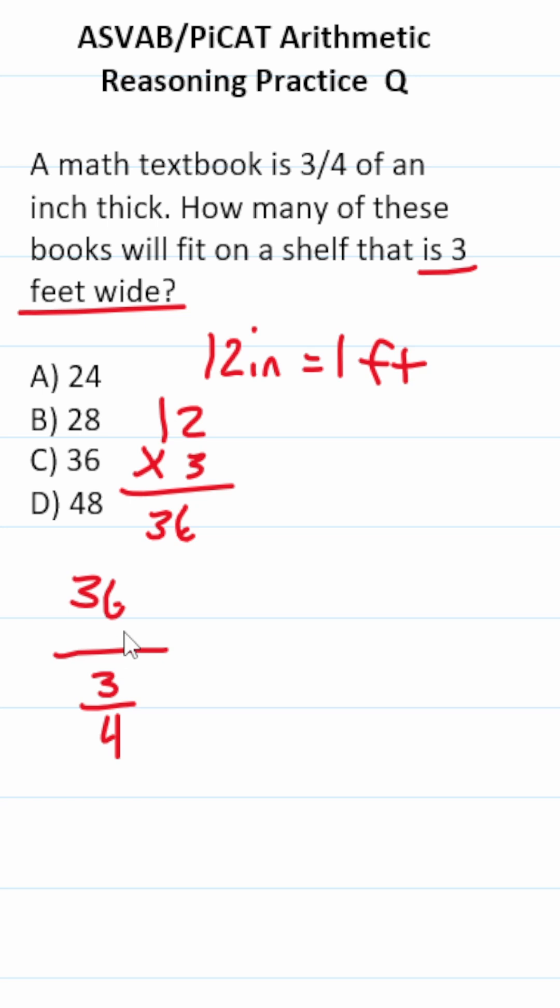Of course, to make this math a little bit easier, we could write 36 as a fraction by placing it over one. Now we follow the algorithm keep change flip since we're dividing two fractions. We keep this top fraction the same, 36 over one. We change from division to multiplication, and then we flip this bottom fraction to be four over three.